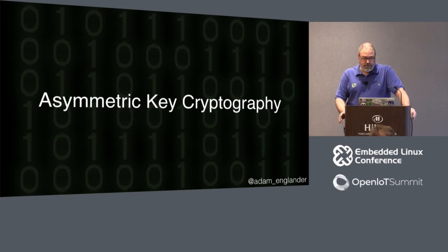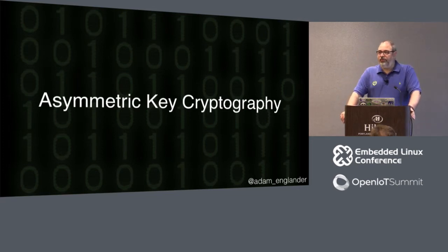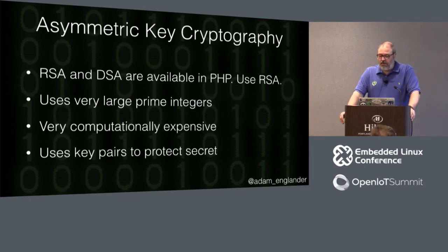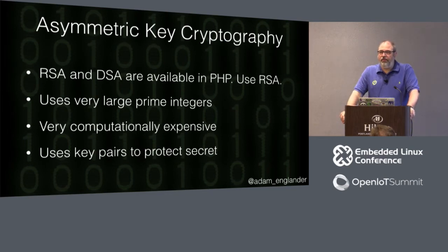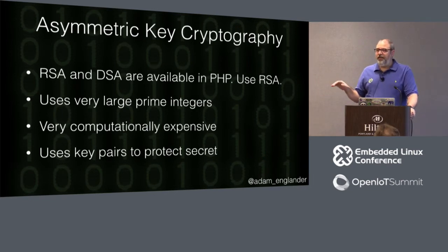Asymmetric key cryptography — probably the most secure. If you've ever done TLS, you've used asymmetric key cryptography. RSA and DSA are available in most languages including PHP. Use RSA — DSA had questions about copyrights and patents. RSA uses very large prime integers. If you're using Linux you're probably okay; if you're using embedded chips, you may have trouble. The company I work for spent months trying to generate a single 1024-bit key — which is not secure — and had to get special processors because generating very large prime numbers is computationally demanding.